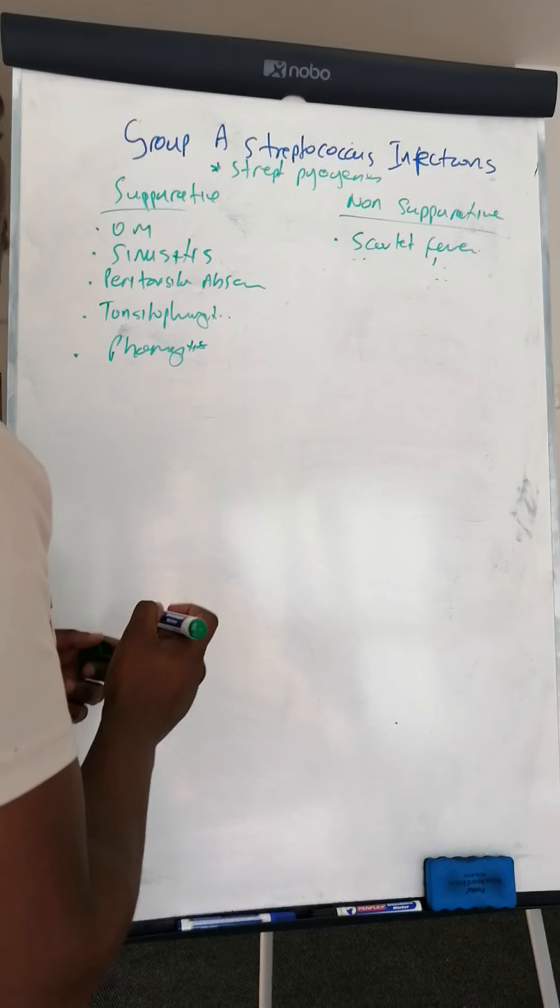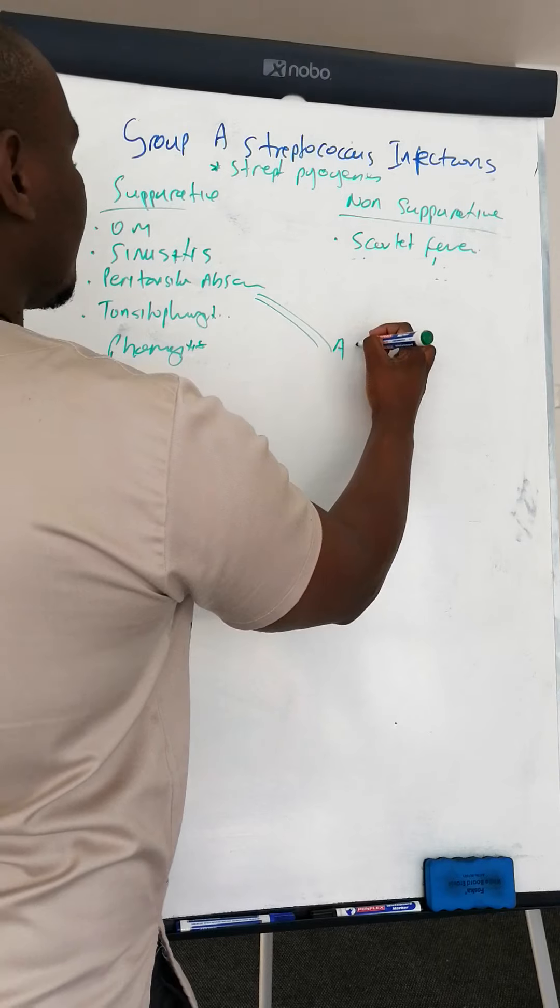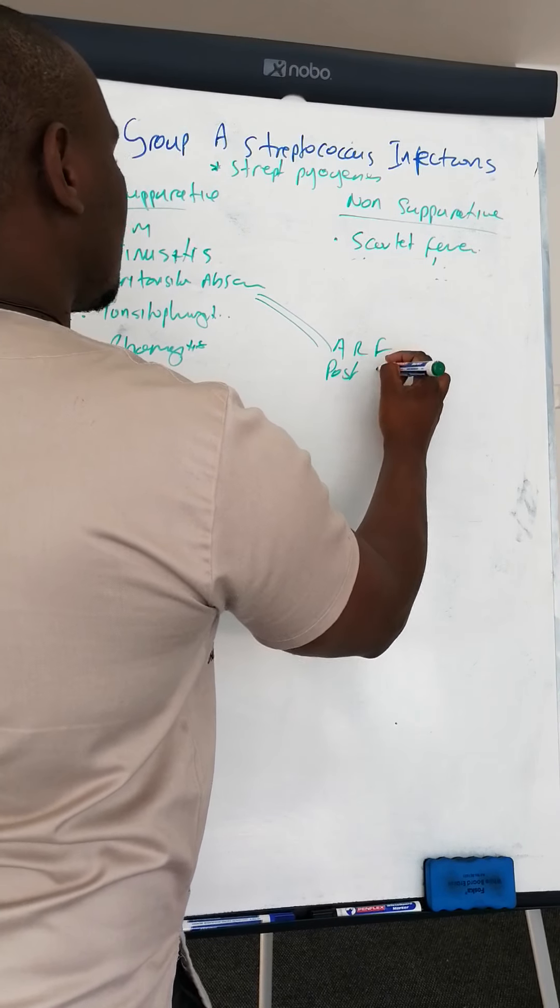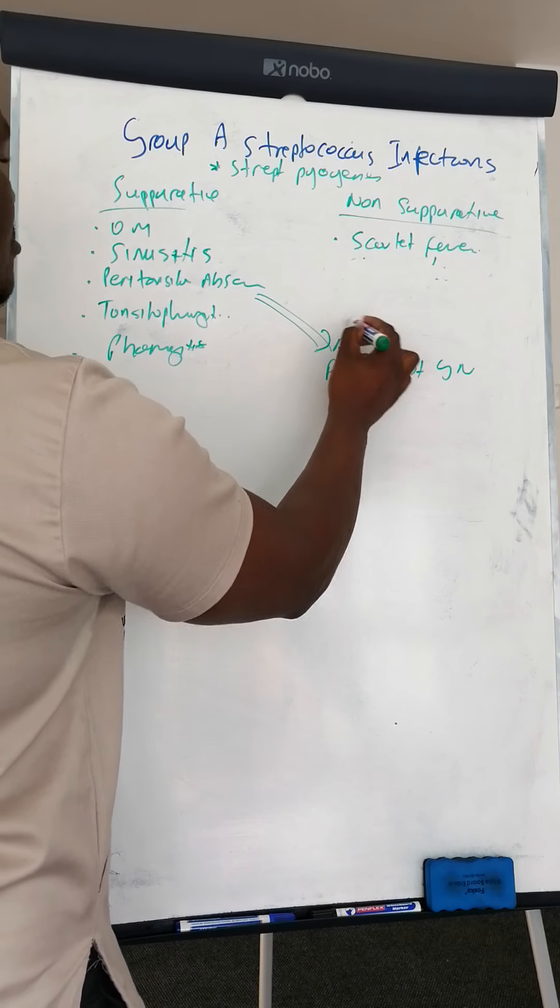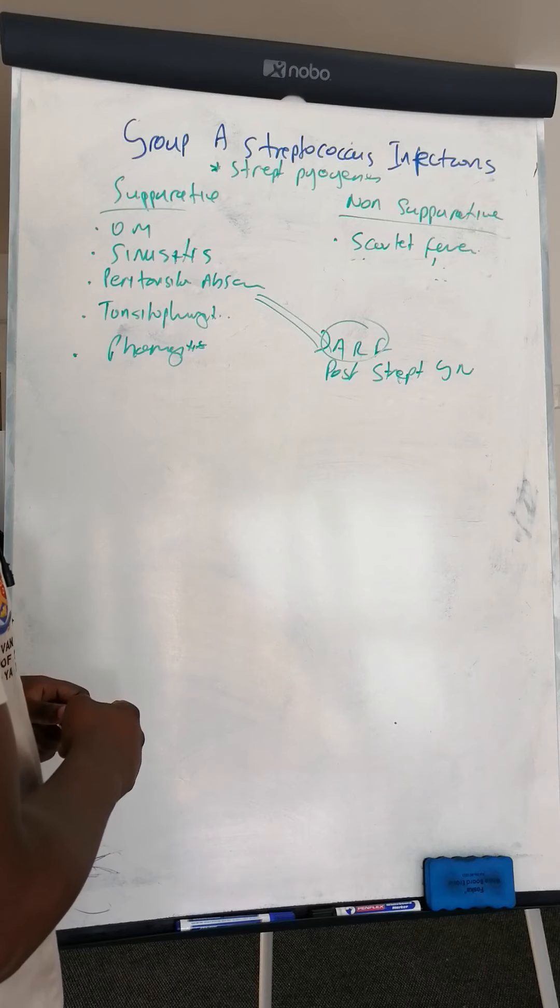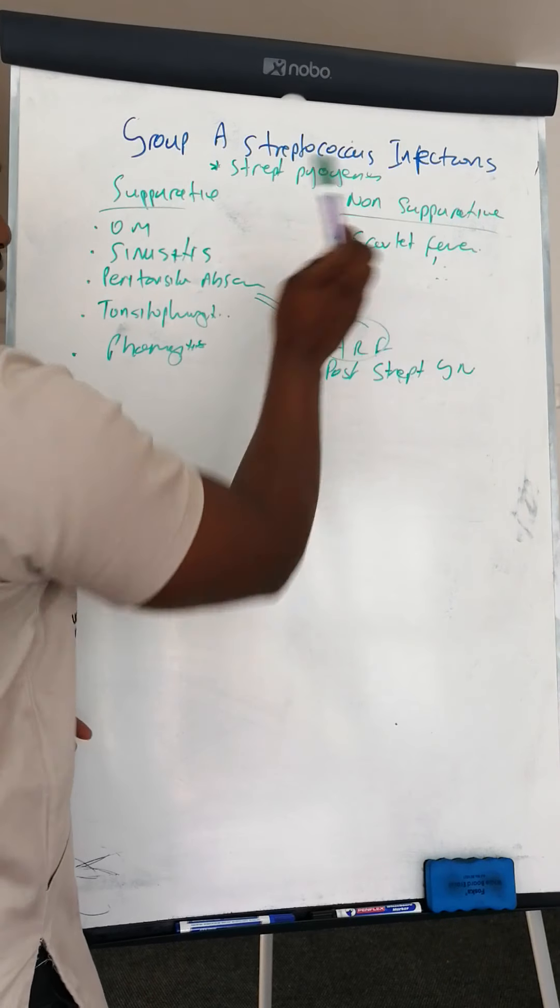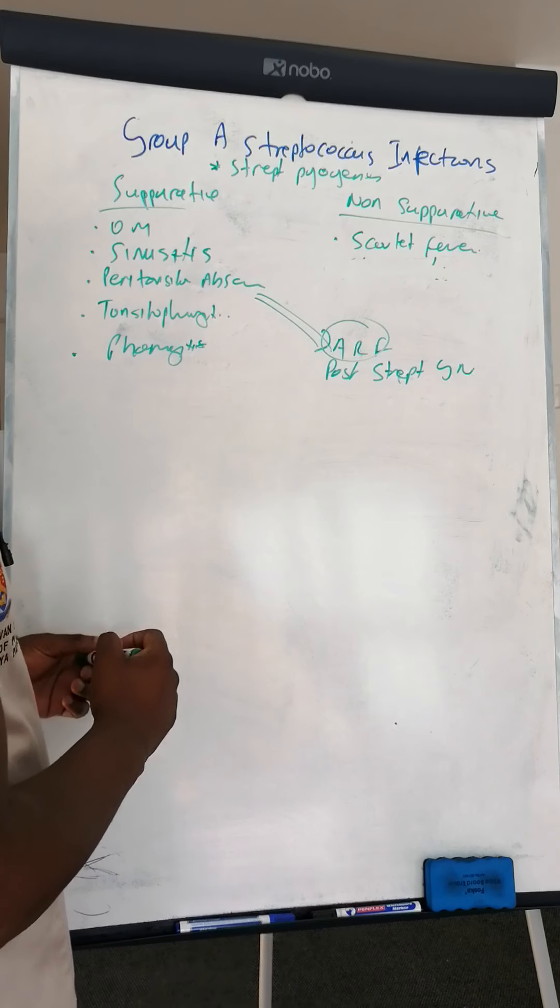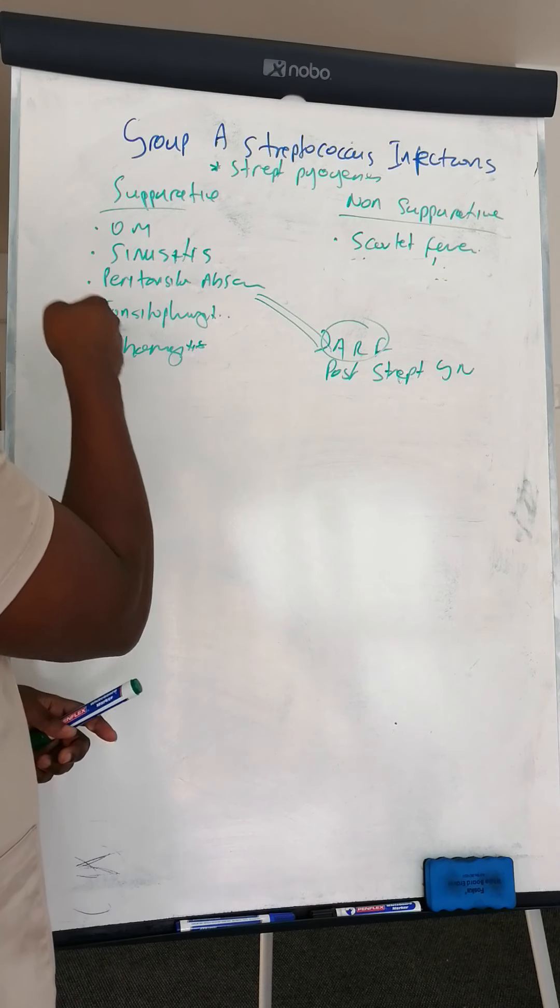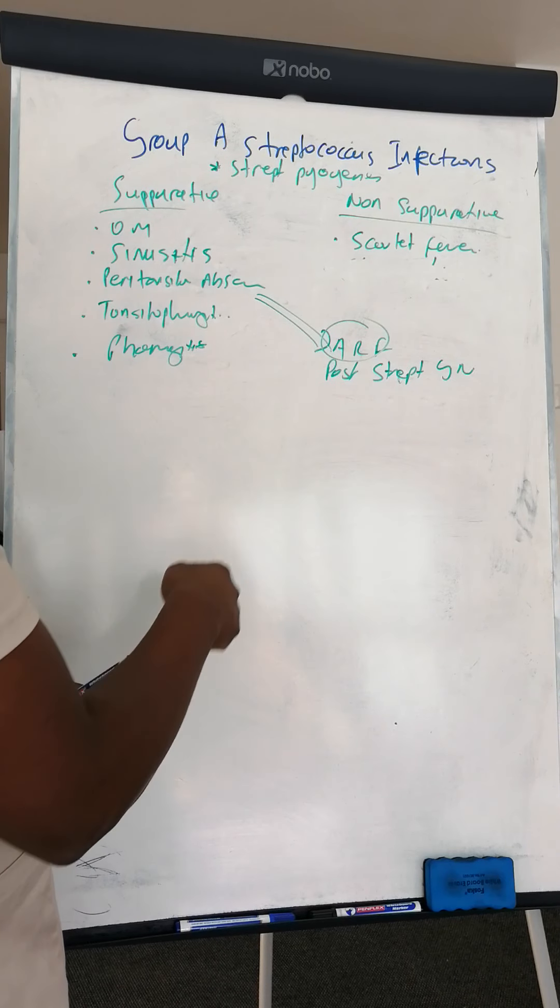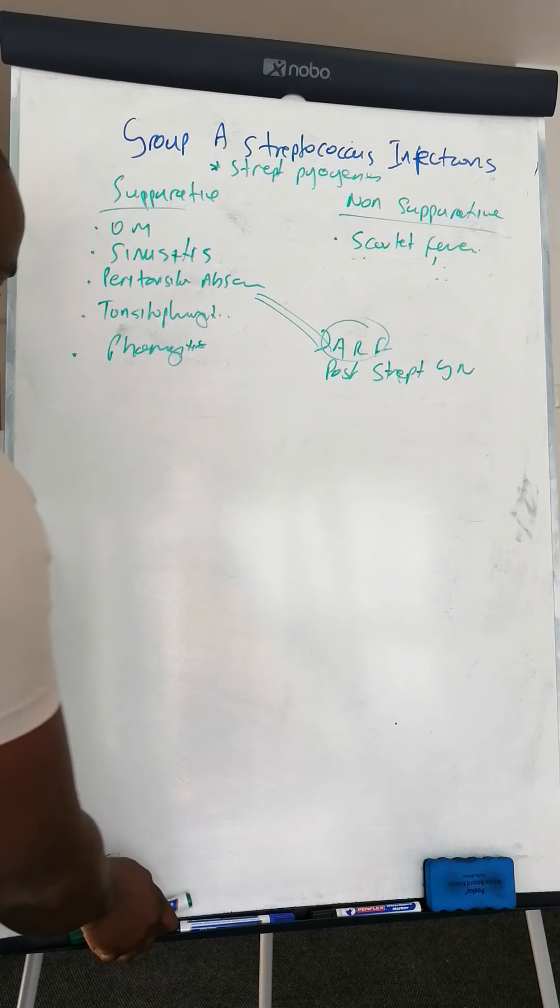But what makes this special is the fact that it complicates into acute rheumatic fever and post-streptococcal glomerulonephritis. I know there are people who put these under non-suppurative, but personally I don't think they're supposed to be there because it's not the bacteria that causes this, but it's the cross-reactivity that happens. It's not the bacteria directly, but here it's the bacteria directly causing these. But it's not the bacteria directly causing these, it's molecular mimicry, which we're going to talk about now.